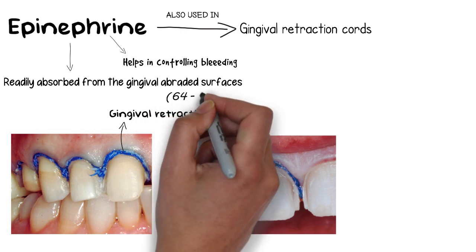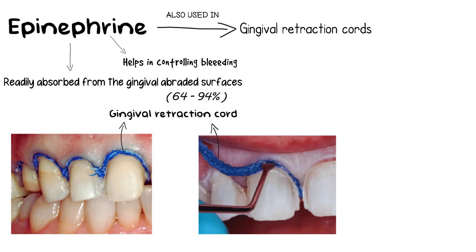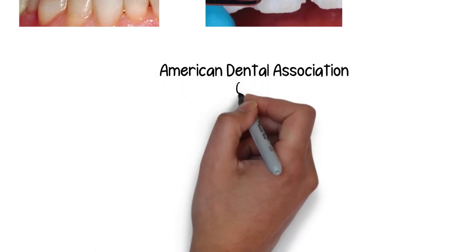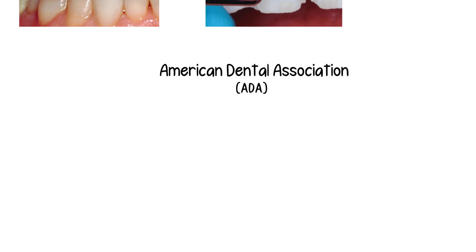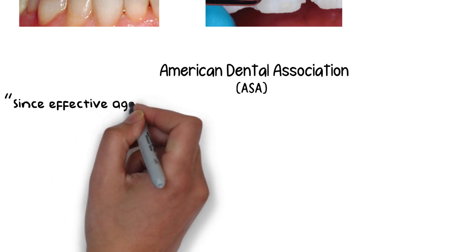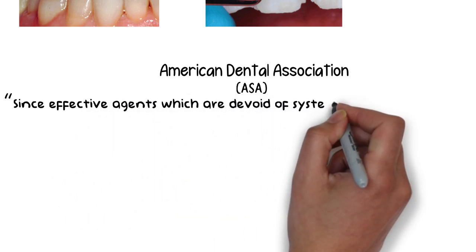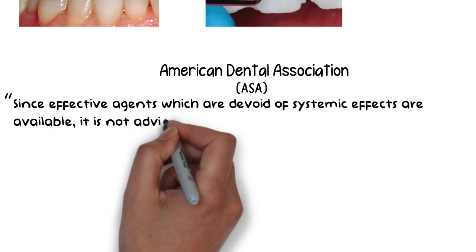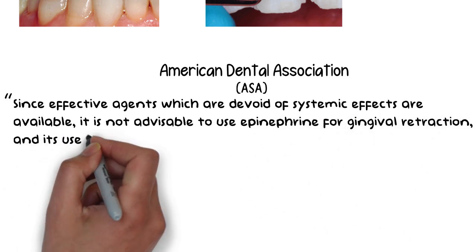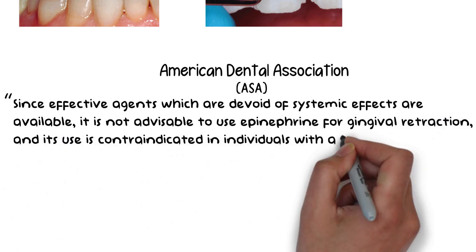Approximately 64 to 94% of applied epinephrine is noted to get absorbed into the cardiovascular system through the gingival margins. Because of such a high percentage of absorption from abraded gingival margins, the ADA, or the American Dental Association, with regards to the use of epinephrine in gingival retraction cord, states the following in Accepted Dental Therapeutics: since effective agents which are devoid of systemic effects are available, it is not advisable to use epinephrine for gingival retraction, and its use is absolutely contraindicated in individuals with a history of cardiovascular disease.